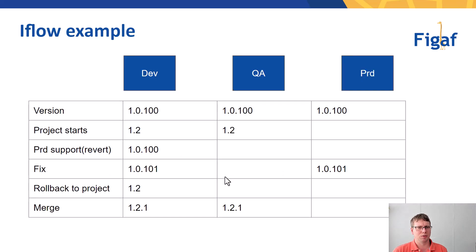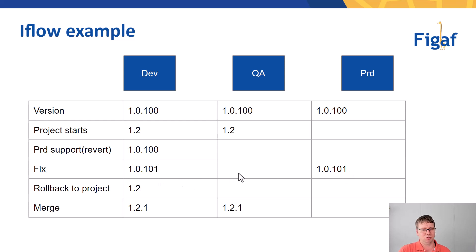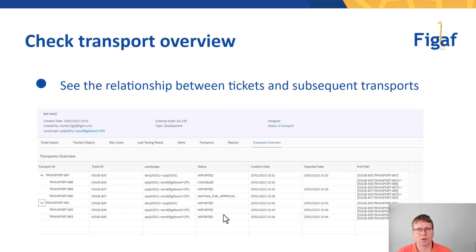You have two landscapes — a project landscape and a support landscape running in parallel. If you just need one landscape, you can have three tenants or a virtual tenant and your productive one. You move version 1.0.0 into production, the project starts and you create a new version, probably moving it into QA. Then you revert to version 1.0.0, fix a patch, and move it into QA and production. It is possible to manage projects in a single landscape — you just need to be careful. The landscape report gives a lot of insight, and the transport overview allows you to see subsequent tickets and track when things move to production.